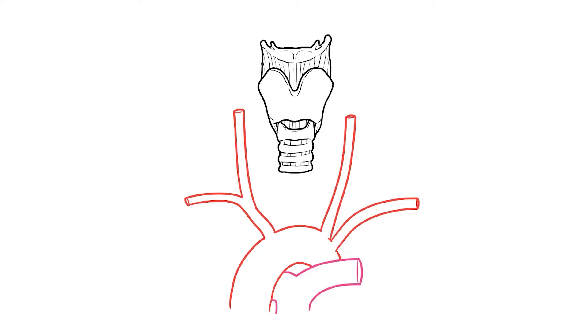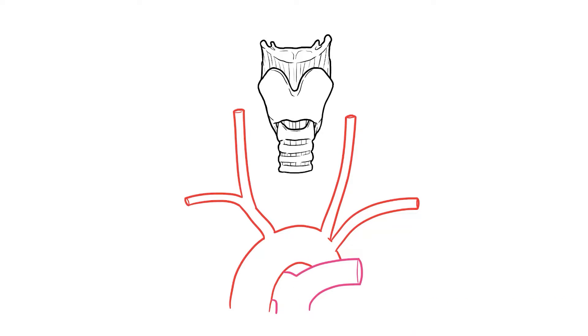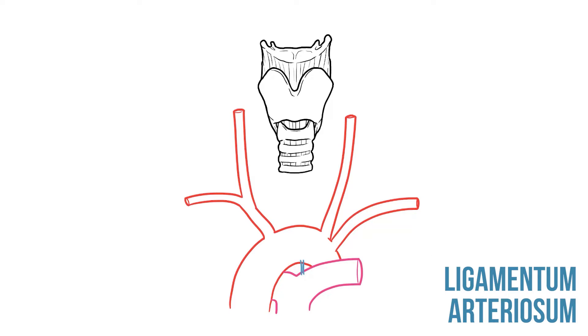During development a connection known as the ductus arteriosus allows blood to move from the pulmonary trunk to the aorta. At birth this vessel should close, but a remnant known as the ligamentum arteriosum remains.